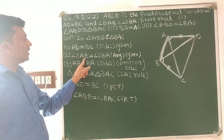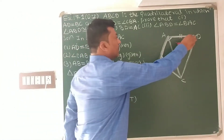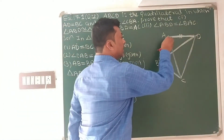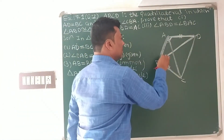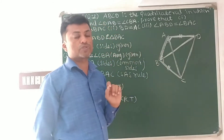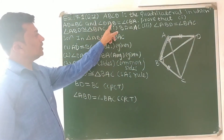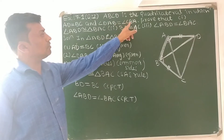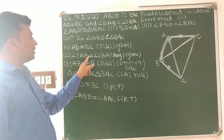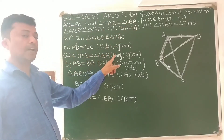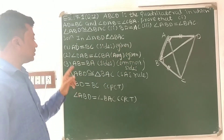Second, angle DAB is equal to angle CBA. Angle DAB means this angle and angle CBA means this angle. They are also the same and it is given in the question. So angle DAB is equal to angle CBA — they are angles and it is also given.